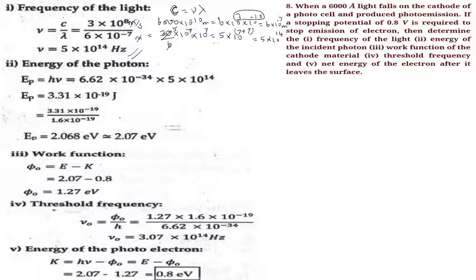Now, what does energy mean? The photon energy E_p is equal to hν, where h = 6.626×10⁻³⁴ J·s. So E_p = 6.626×10⁻³⁴ multiplied by 5×10¹⁴.